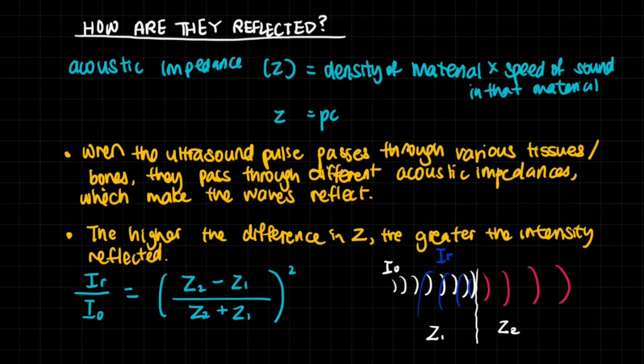One very key element is that ultrasound is reflected at different boundaries. How and why are they reflected? I've previously mentioned that boundaries between materials that have different acoustic impedances will reflect the sound wave. Here is what acoustic impedance is: it's denoted by Z, and it's basically the product of the density of the material and the speed of sound in that material - Z equals ρc.